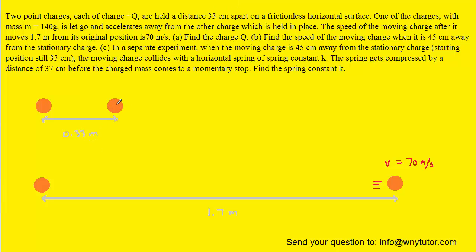This charge is going to be released and it's going to be repelled away from the other charge. By the time it gets 1.7 meters away, it's moving with a speed of 70 meters per second. Our job is to find the charge Q, which is present on both charges. Note that they both have the same charge of positive Q.